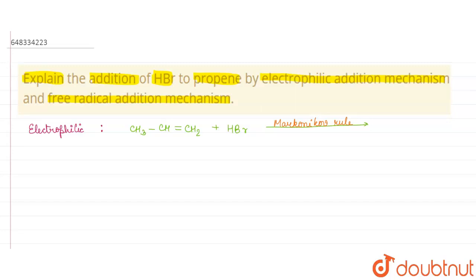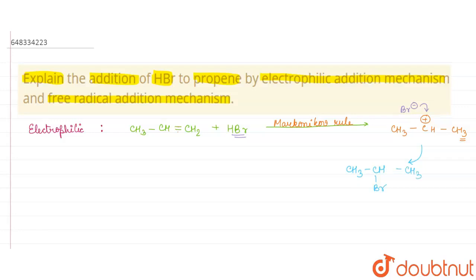According to Markovnikov's rule, at one position hydrogen will be added and at the other position Br will be added. So suppose here the hydrogen is already added, giving CH₃CHCH₃ with a positive charge — a carbocation — and the double bond becomes a single bond. There is Br⁻ present in solution from the HBr, so it comes and attacks the carbocation.